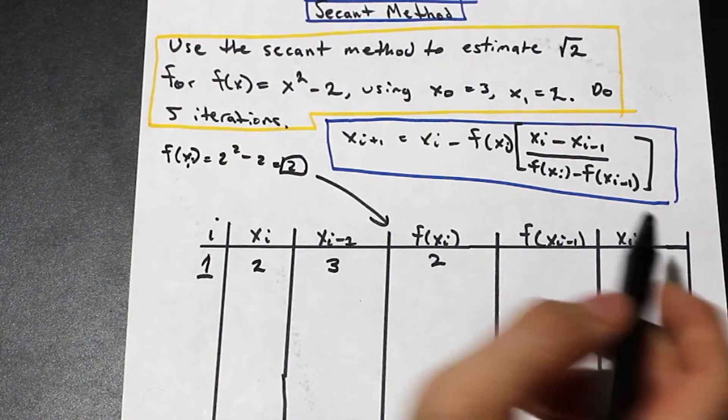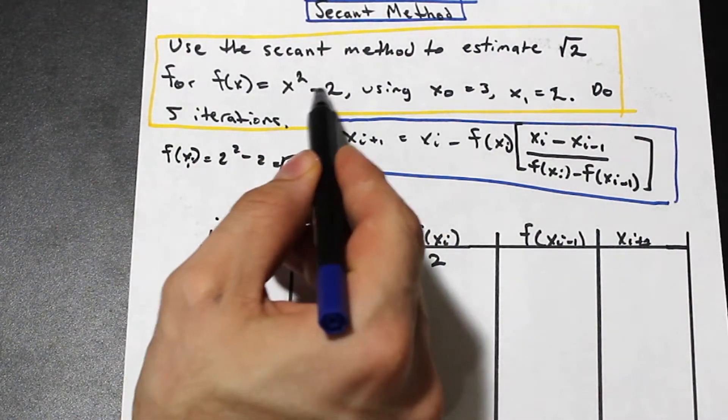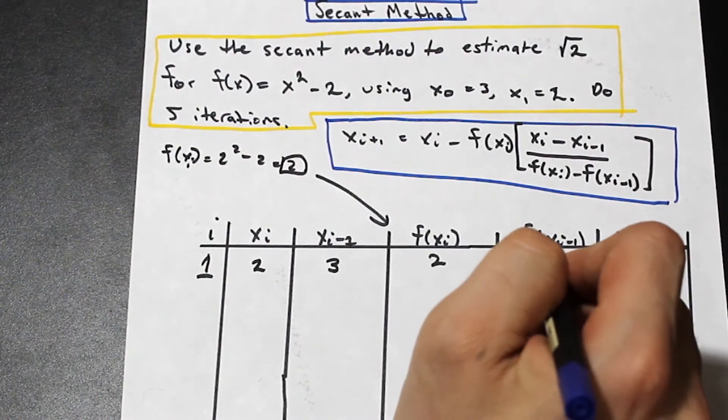So 2 goes in here for the first row. And then f(xi-1), same thing, take xi minus 1, which is 3, plug it in here, you're going to get 9 - 2, that's 7.